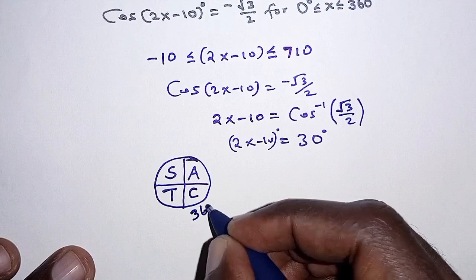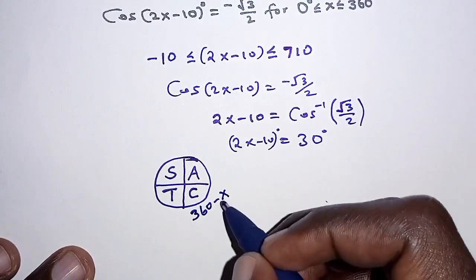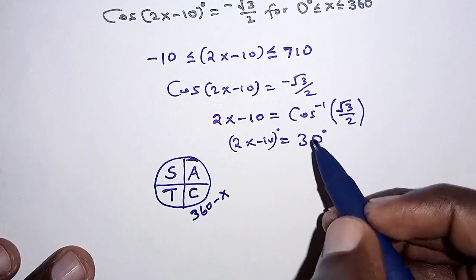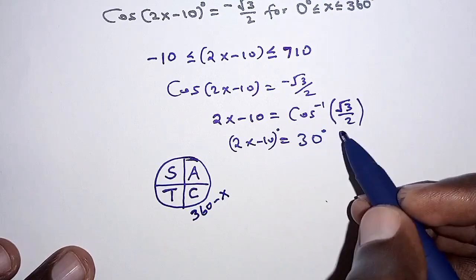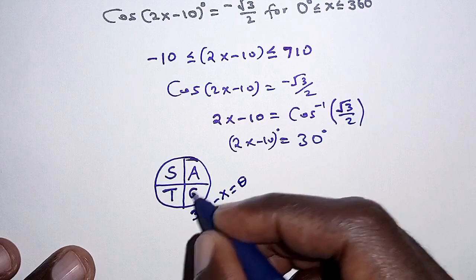so we have 360 minus an acute angle x, and this acute angle x represents the acute angle that we calculate in this first step. So that should give us the angle theta in this quadrant.